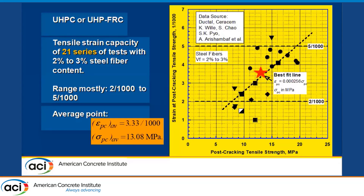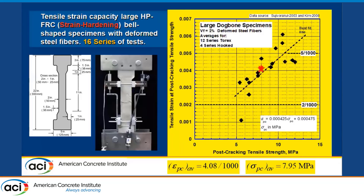This is another set of data from Suji Vorakul and Kim, about 15 years ago, on large HPFRC specimens — basically strain hardening composites. The specimens are quite large: 22 inches long with a two-inch by one-inch cross section. We see the same trend: the higher the post-cracking tensile strength, the higher the strain. The average here is a bit larger at 4.08 over a thousand, and all specimens tested used deformed fibers — in this case, hooked and twisted fibers.